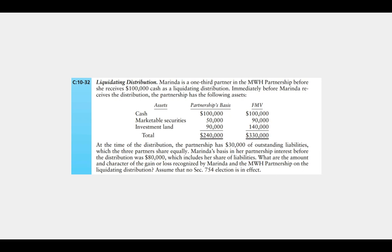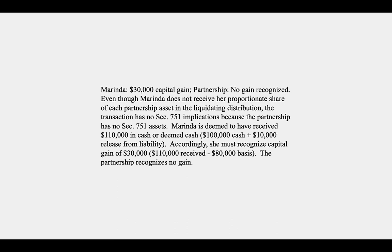In Problem 32, Miranda is a one-third partner in the MWH partnership. Before she receives a one hundred thousand dollar cash liquidating distribution, the partnership has the following assets: cash, marketable securities, and land. At the time of the distribution, the partnership has thirty thousand dollars of outstanding liabilities which the three partners share equally. Miranda's basis in her partnership interest before the distribution was eighty thousand dollars, which includes her share of liabilities. We need to determine the amount and character of gain or loss recognized. First we check for a Section 751 issue — we have no inventory, no unrealized receivables, and no depreciation recapture since we only have land, which is not depreciable. So there's no Section 751 issue.